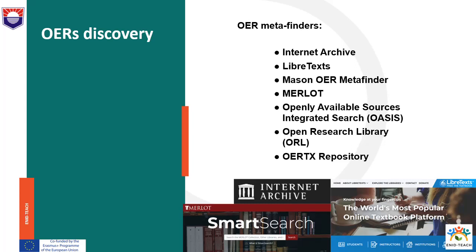Mason OER MetaFinder conducts a real-time simultaneous search across 21 different sources of open educational materials. MERLOT provides smart search in collections of free and open online teaching, learning and support materials as well as content creation tools, primarily addressed to the faculty, staff and students of higher educational institutions. OASIS (Openly Available Sources Integrated Search) is a tool that searches open content from 98 different sources and makes the searching process easier. Open Research Library (ORL) is a platform providing access to more than 20,000 open access books. OERTX repository is a public digital library of open educational resources for higher education.